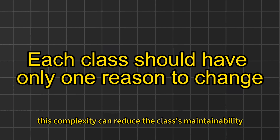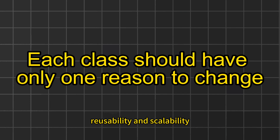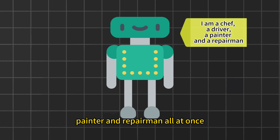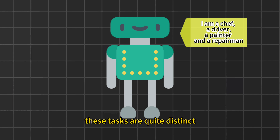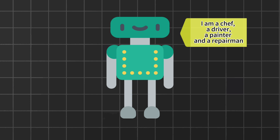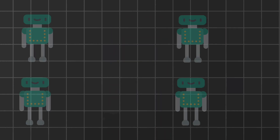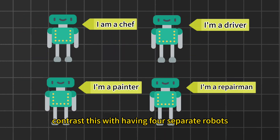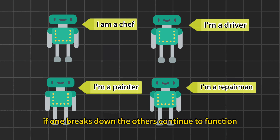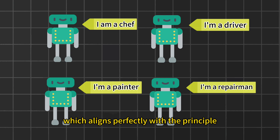This complexity can reduce the class's maintainability, reusability, and scalability. For a clearer illustration, imagine a robot designed to function as a chef, driver, painter, and repairman all at once. These tasks are quite distinct, and lumping them together violates the Single Responsibility Principle. If this robot malfunctions, all its functions fail simultaneously. Contrast this with having four separate robots, each dedicated to one of these roles — if one breaks down, the others continue to function, which aligns perfectly with the principle.